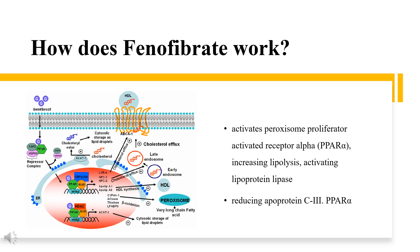Fenofibrate activates peroxisome proliferator-activated receptor alpha (PPAR-alpha), increasing lipolysis, activating lipoprotein lipase, and reducing apoprotein C3. PPAR-alpha is a nuclear receptor whose activation alters lipid, glucose, and amino acid homeostasis. Activation of PPAR-alpha stimulates gene transcription and translation that generates peroxisomes filled with hydrogen peroxide, reactive oxygen species, and hydroxyl radicals that participate in lipolysis. This mechanism of increased lipid metabolism is also associated with increased oxidative stress on the liver, and in rare cases can lead to cirrhosis and chronic active hepatitis.